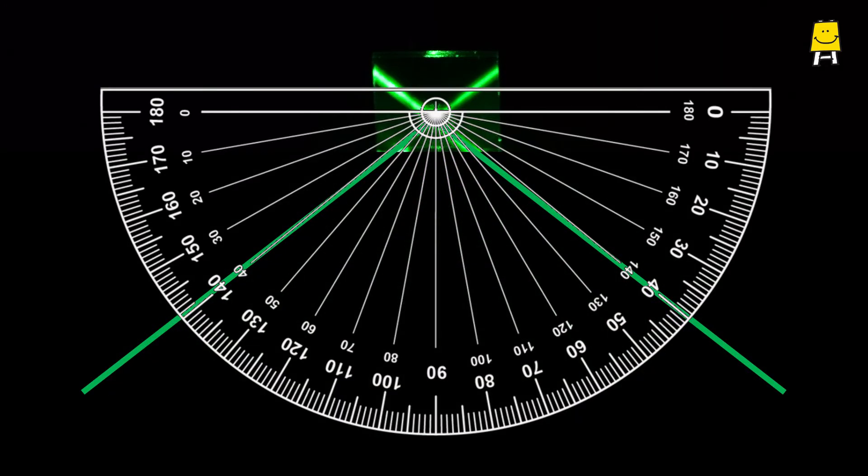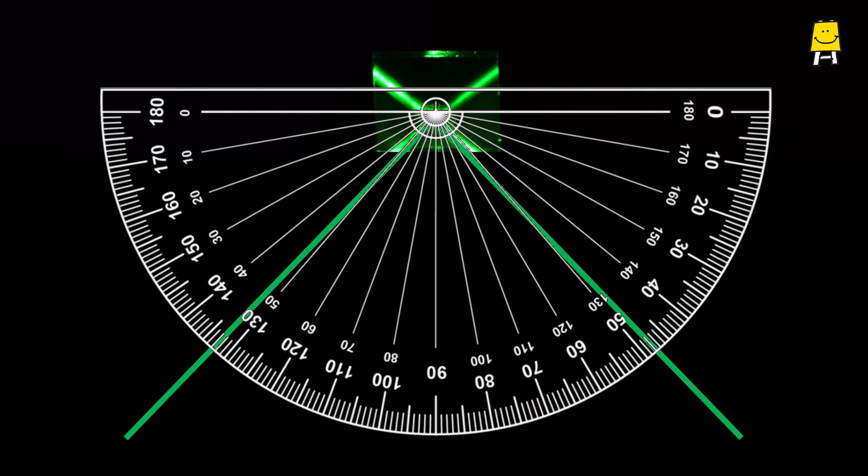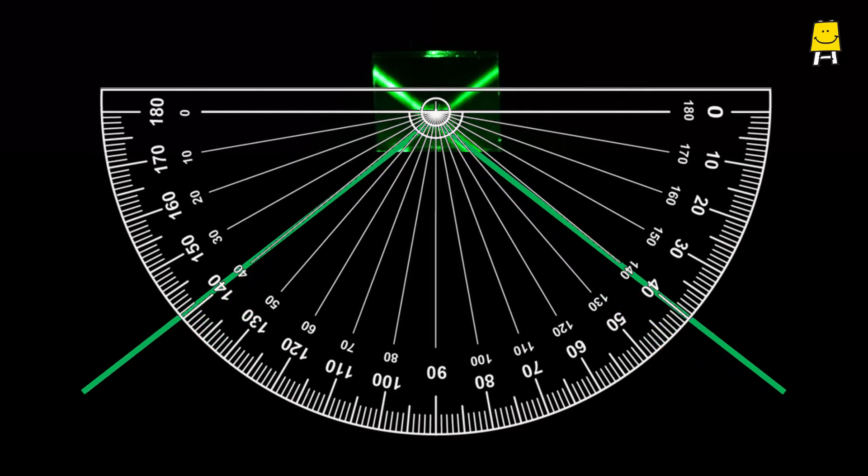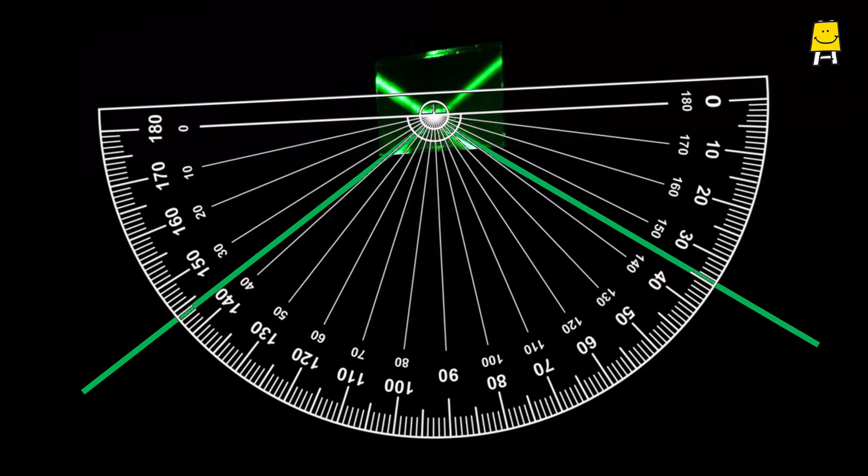As we have seen before, when you change the angle at which the laser beam hits the mirror, angle of reflection also changes. Rotating the mirror also changes this angle.